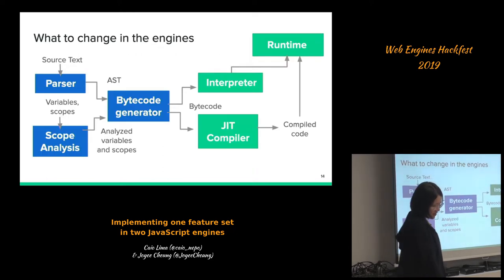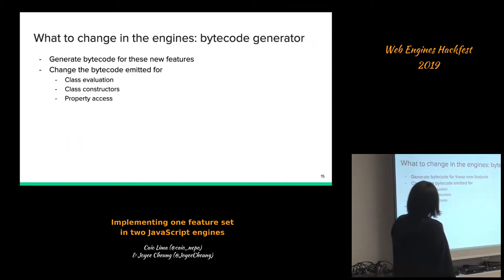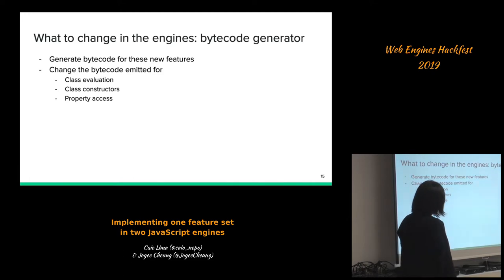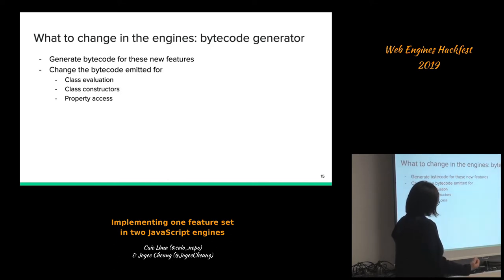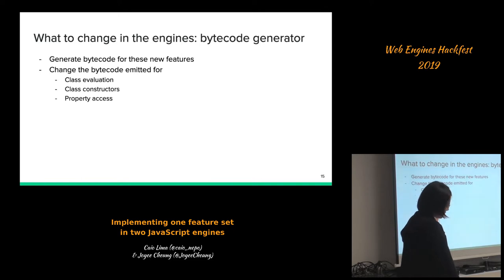Next we need to emit new bytecodes for these new class features. We need to change the bytecode emitted for class evaluation as well as the bytecode for class constructors in the case of instance private names. We also need to modify the bytecode emitted for property access, especially for private property accesses.